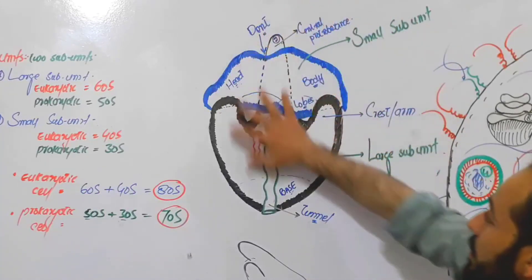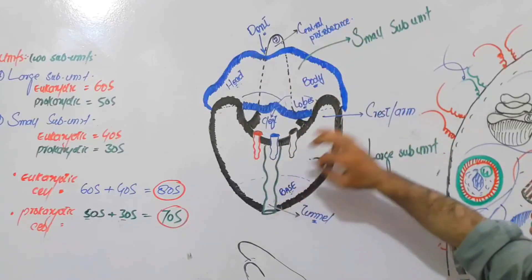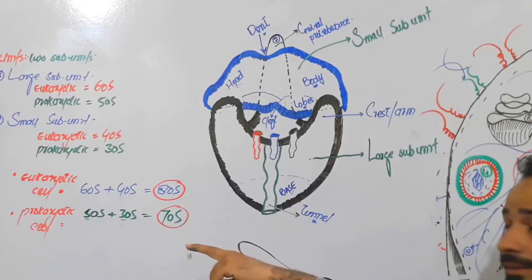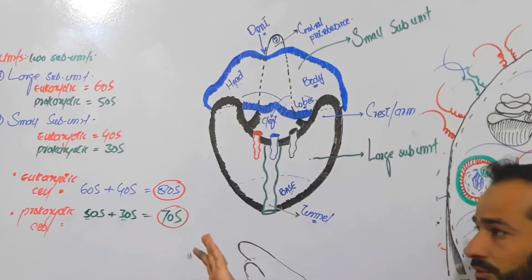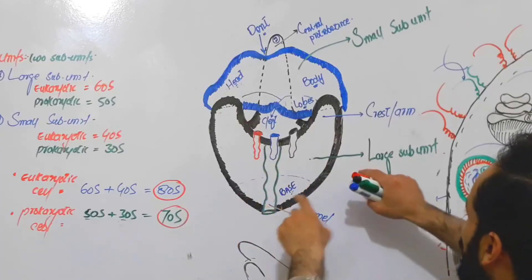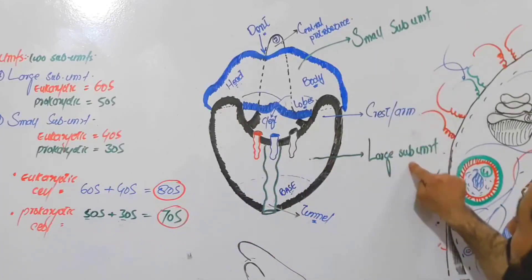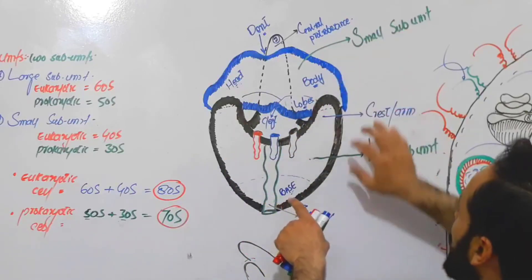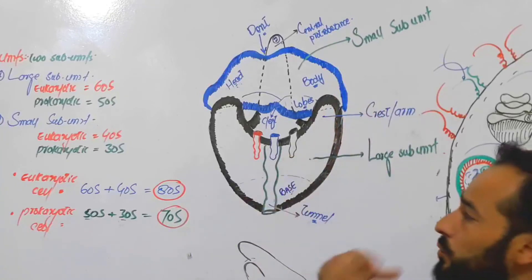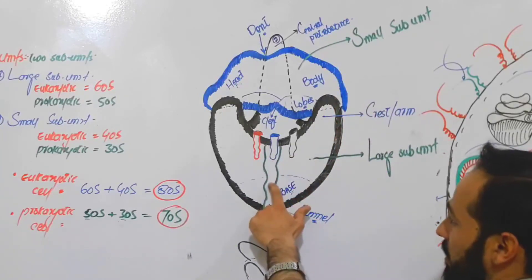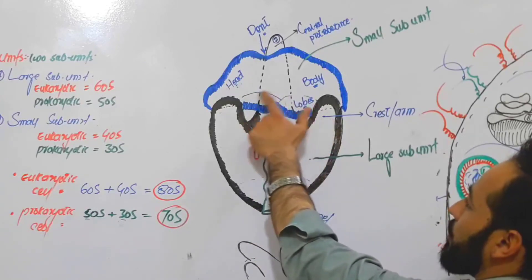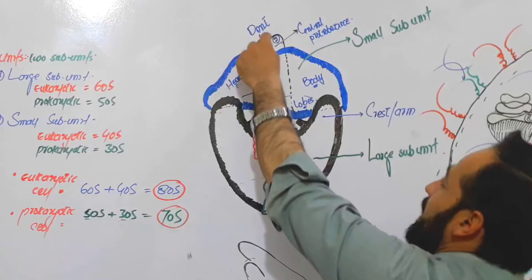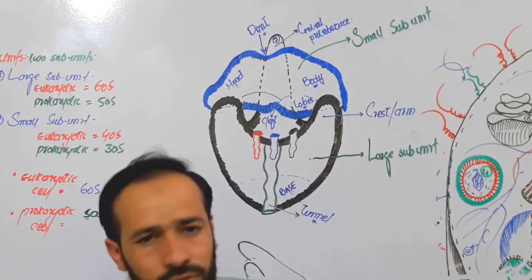These were the important structures and landmarks of the ribosome. To recap: this is the second video about ribosome. There are two sub-units — the large and the small — and within them the important markings are: the base, the tunnel, the cleft, the lobes, the head, the body, the crests of the large sub-unit, the central protuberance of the large sub-unit, and the dent of the small sub-unit.